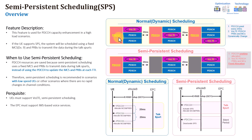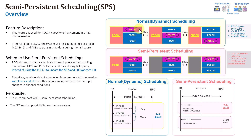In normal scheduling, the PDCCH allocation or PDCCH grant is allocated every 20 milliseconds, and accordingly the PRBs or resource blocks and the MCS or the scheduling part are allocated to the user every 20 milliseconds based on the PDCCH grant allocation. For example, in this scenario we're assuming four VoLTE users being served, having different radio conditions, so the scheduling assigns different locations of resource blocks and different MCS values.